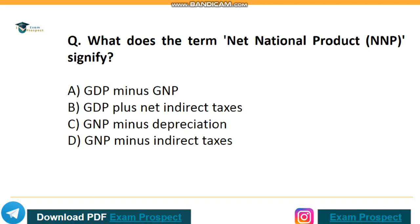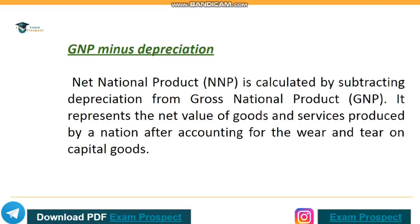Next question: What does the term Net National Product signify? Correct answer: option C, GNP minus depreciation. Net National Product is calculated by subtracting depreciation from Gross National Product. It represents the net value of goods and services produced by a nation after accounting for the wear and tear on capital goods.